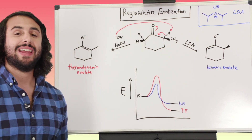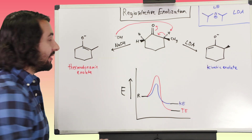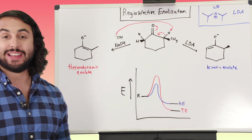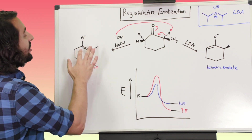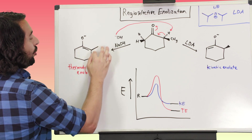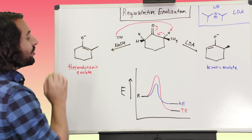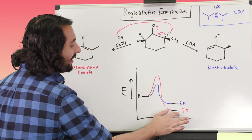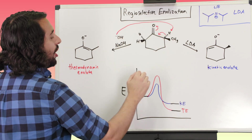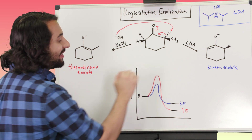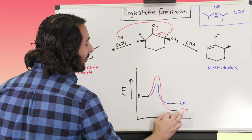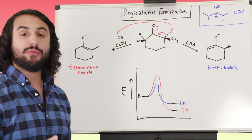This is thermodynamically driven because it is driven by the stability of the product. Remember when we talked about alkene stability — the more substituted an alkene is, the more stable it is. This is the most substituted enolate we can have because the double bond is where this methyl group is. This is our thermodynamic enolate because the product sits lower on the energy diagram. We're ending up lower on the energy diagram — this is the more thermodynamically favorable product.